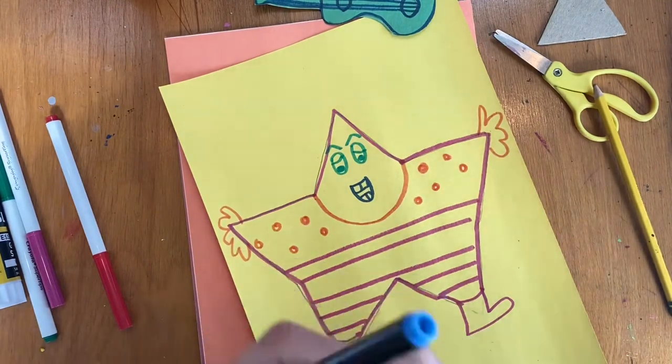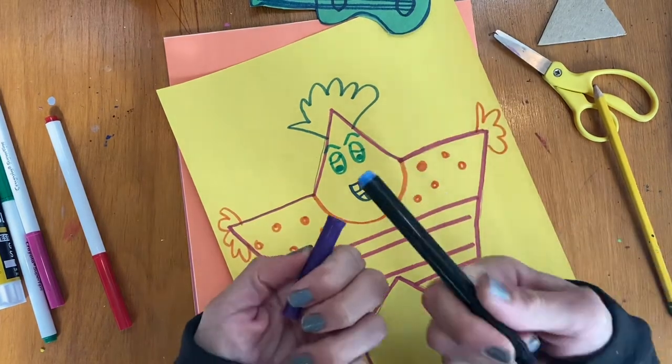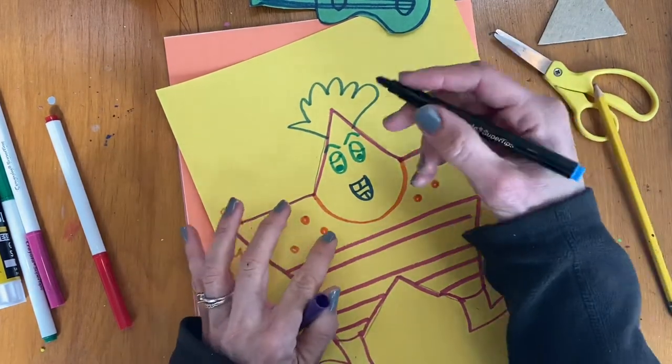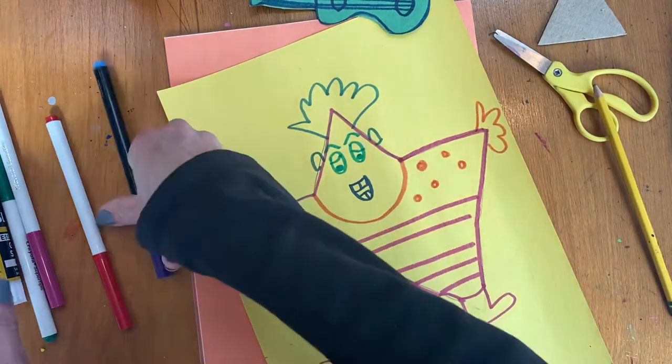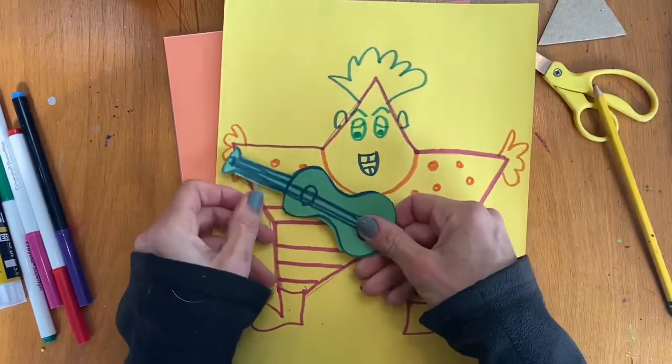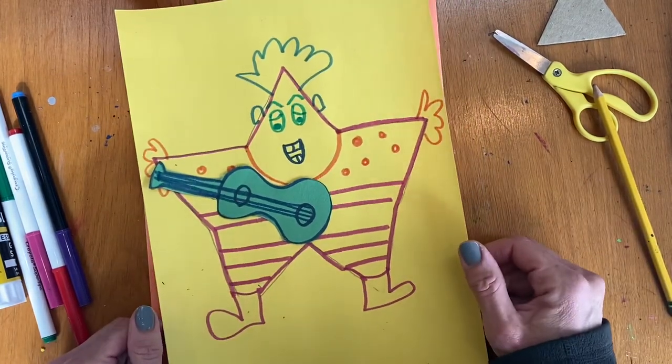And I might give him some hair. A rock star might have, oops, some purple hair. Oh, I thought it was purple. The lid was purple and the marker was blue. But you know, if that happens, that's okay. Give him some ears. Maybe I'll use my glue stick and glue his guitar on there. Put a microphone in the other hand. You can add all sorts of stuff.